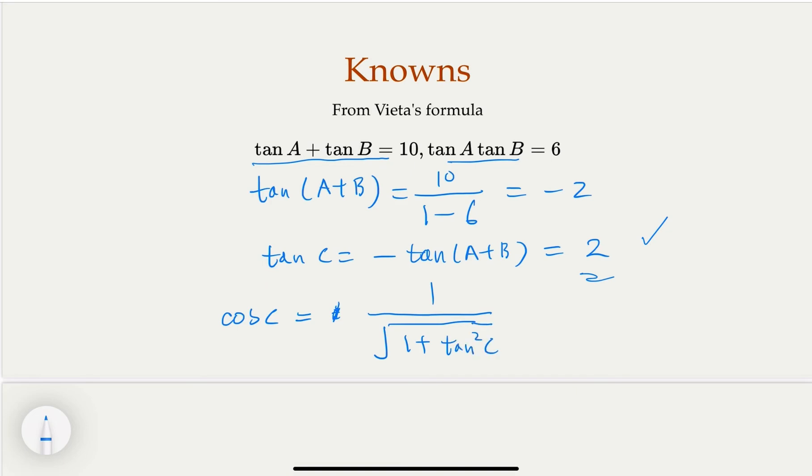So this will give us 1 over square root of 5. So the final answer is the square root of 5 divided by 5, or 1 over square root of 5. So either one should be correct.